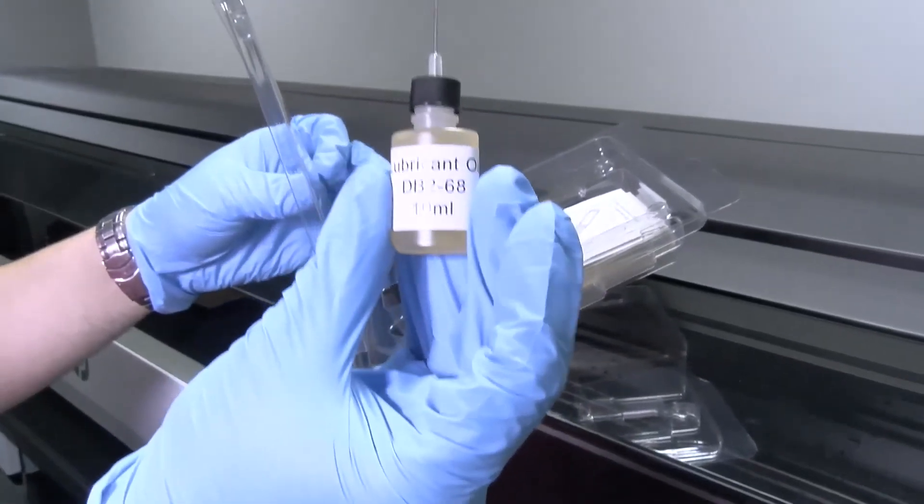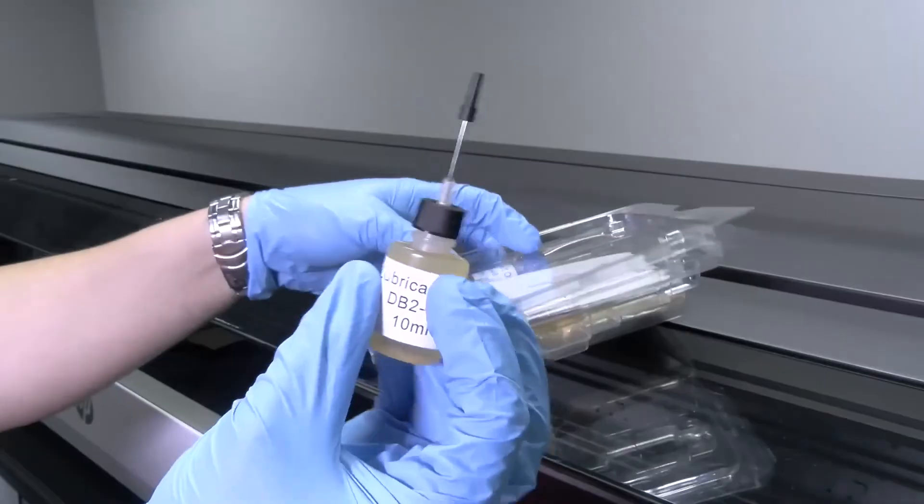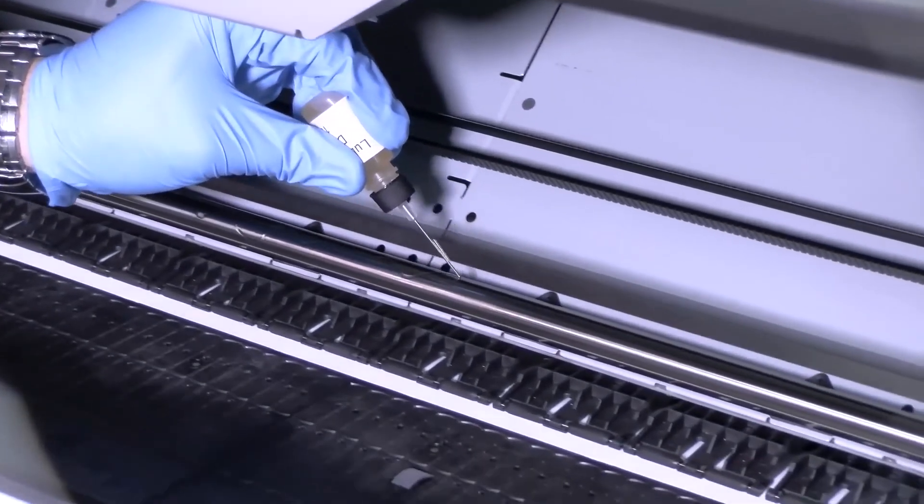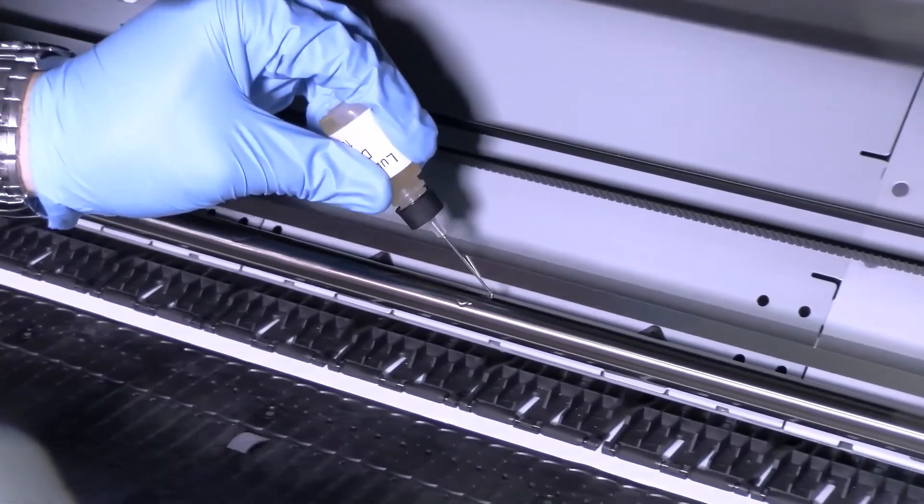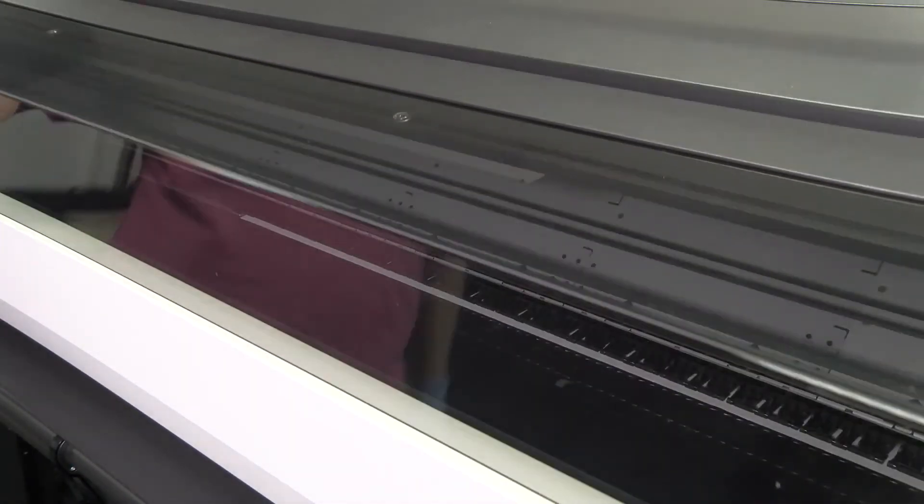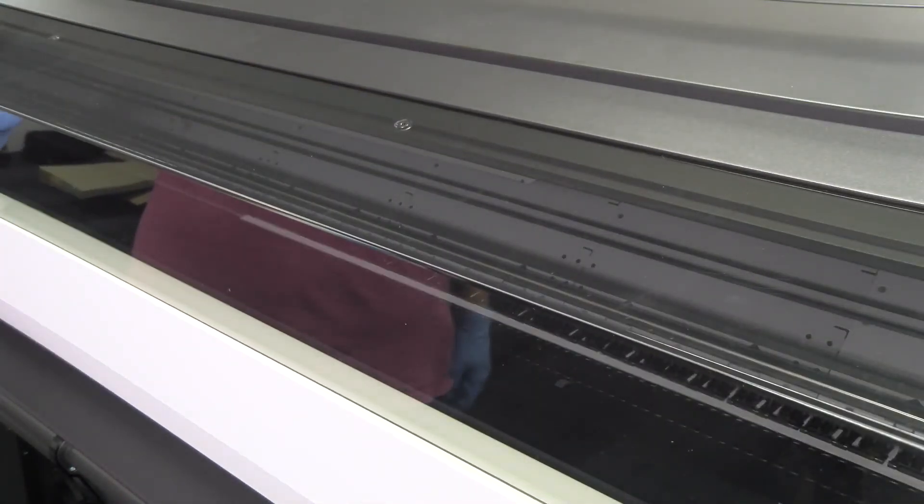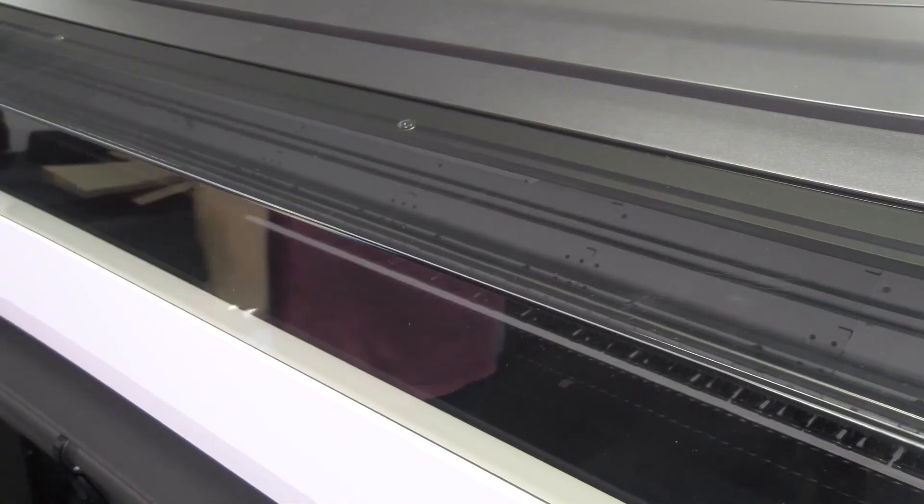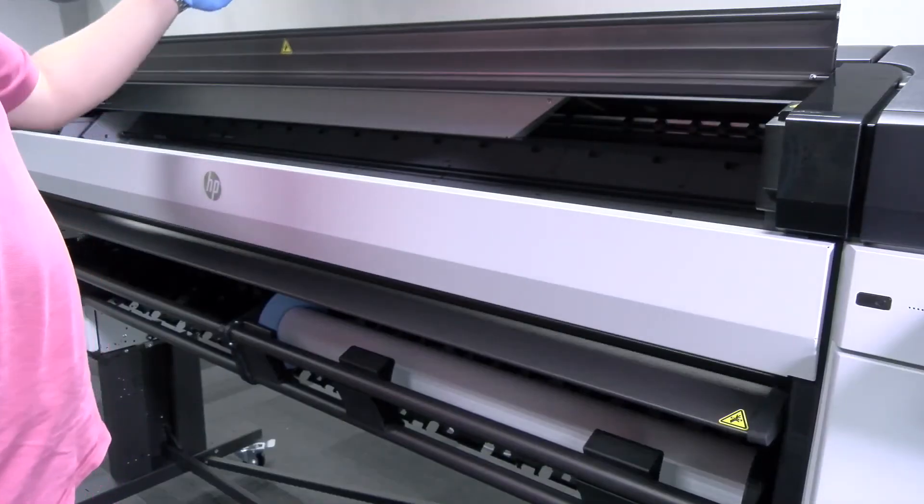Take the bottle of oil from the printer's maintenance kit and put a very thin zigzag trickle of oil along the rod. Tap OK on the front panel and close the front cover. The carriage will move from one side of the printer to the other to distribute the oil along the whole rod.